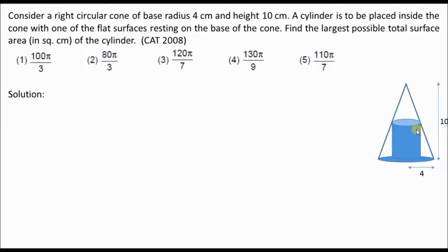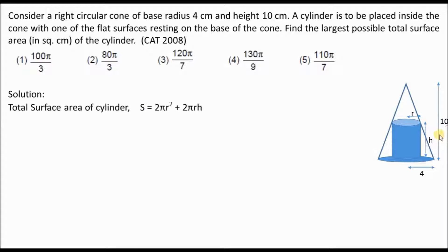Since we don't know the height and the radius of the cylinder, let the height be h and the radius be r. The surface area of the cylinder is 2πr² + 2πrh. This is a fundamental formula you should know.